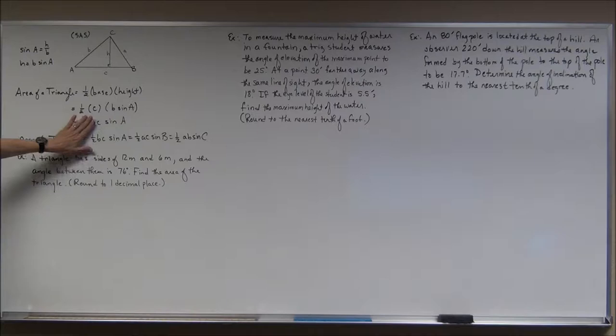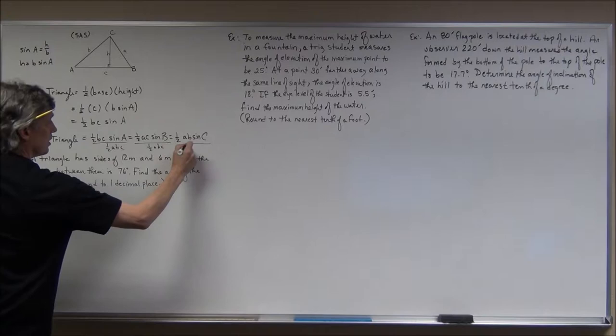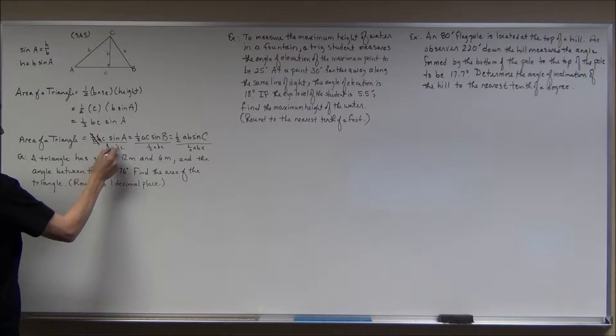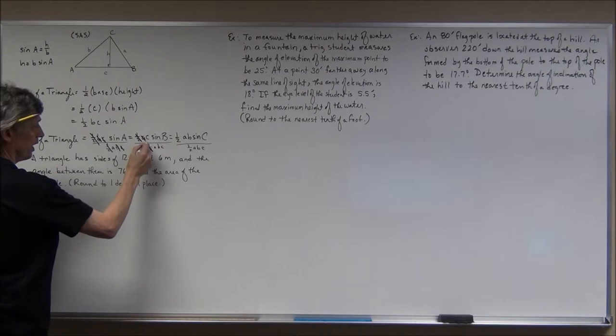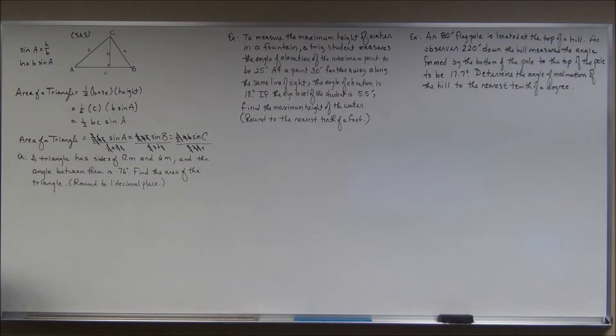Also, if you look at this extended equation and divide through all three parts by one-half · A · B · C, the halves cancel, the B's and C's cancel, giving sine(A)/A. The halves, A's, and C's cancel, giving sine(B)/B. The halves, A's, and B's cancel, giving sine(C)/C. From this we have derived the law of sines.